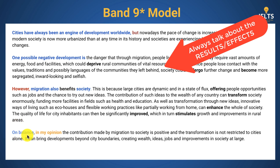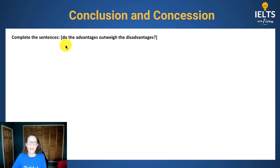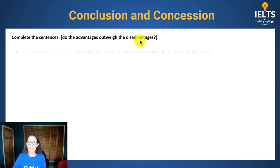In the conclusion, always sum up and give your opinion whether it's positive or negative. I have lots of videos about how to write conclusions, especially using concession. I just want to show you this question: 'Do the advantages outweigh the disadvantages?' — you have to say if one is better than the other.